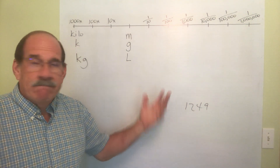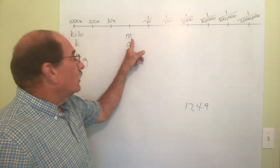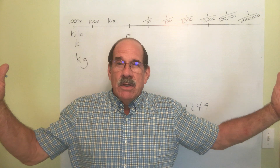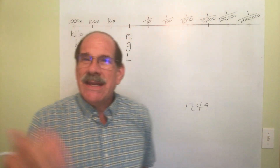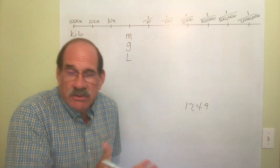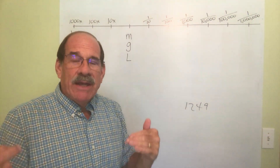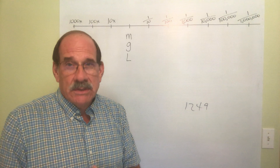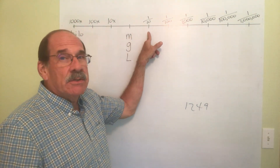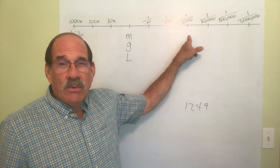Now let's go the other way — smaller by one-tenth each time. Whatever a meter is — about a little more than three feet — one-tenth of that: you don't need that word in the medical field. The next one we do need, but let's keep going smaller by one-tenth of the previous. One-tenth of one-tenth is one-hundredth; one-tenth of that is one-thousandth.